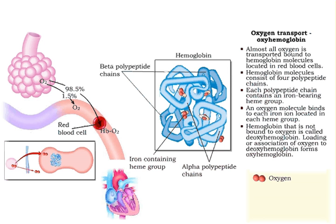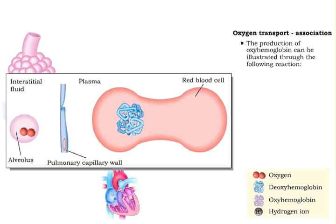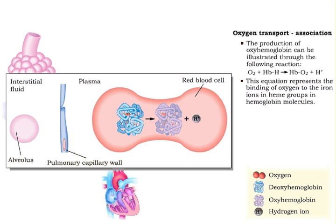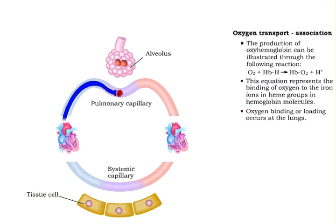Hemoglobin that is not bound to oxygen is called deoxyhemoglobin. Loading or association of oxygen to deoxyhemoglobin forms oxyhemoglobin. The production of oxyhemoglobin can be illustrated through the following reaction: oxygen binds with deoxyhemoglobin to form oxyhemoglobin and hydrogen ions. This equation represents the binding of oxygen to the iron ions in heme groups in hemoglobin molecules. Oxygen association occurs at the lungs.